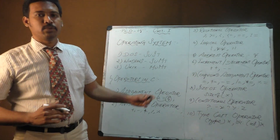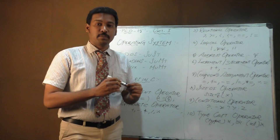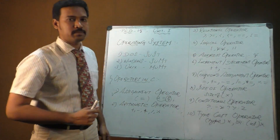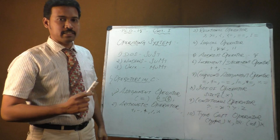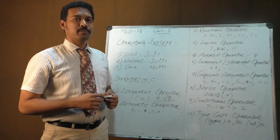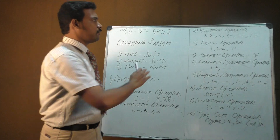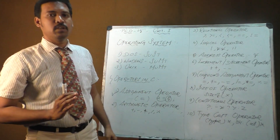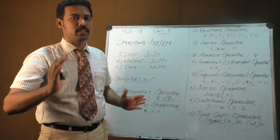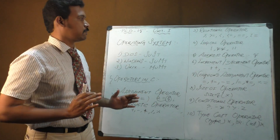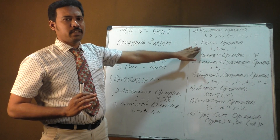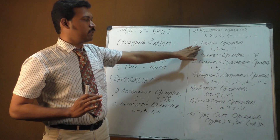The third is the relational operator, which talks about the relationship between different variable values. The relational operators are: greater than, greater than or equal to, less than, less than or equal to, equal to, and not equal to. These are used to find relationships among constants and variables in a C program.